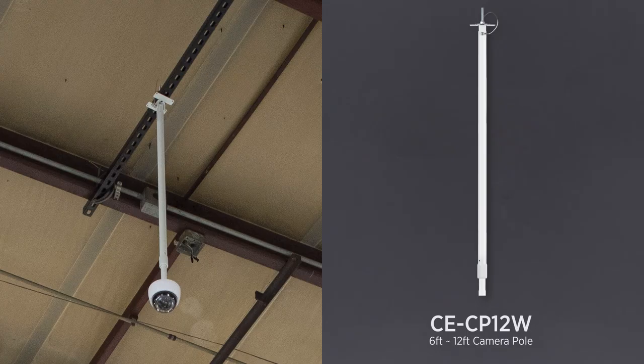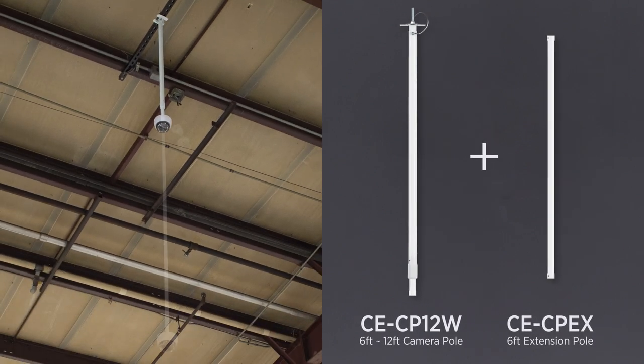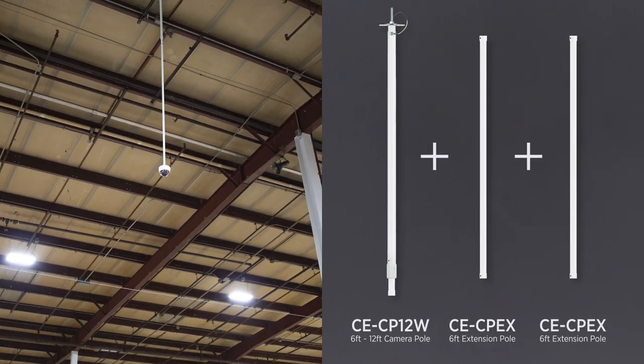For applications that have extra high ceilings, the CE-CP-EX extension pole adds 6 feet of length to the overall mount, and can even be doubled up for additional length.